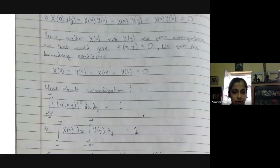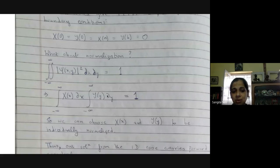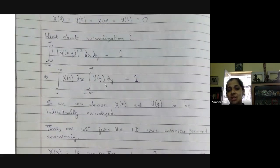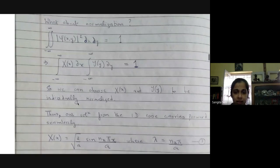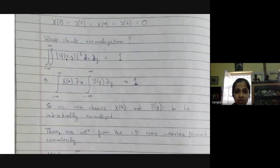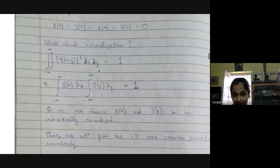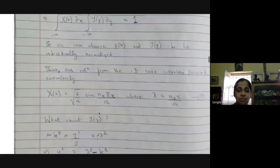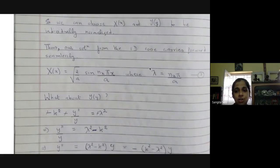Regarding normalization: when I normalize the wave function written as a product, I can separate out the two integrals, so I can choose X and Y to be individually normalized. We have verified that the normalization of X is fine — whatever we did in the one-dimensional case carries through — and the boundary conditions on X are exactly the same as the one-dimensional solution, so I can just replicate that solution.